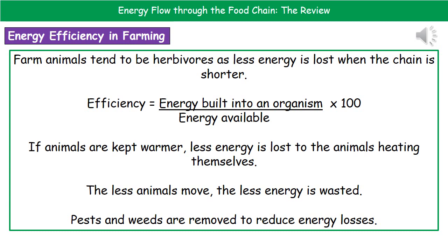Next, if animals don't move as much they will waste less energy. This is where we start to come into the ideas behind intensive farming, where things are kept in cages. It does raise the question of whether it is humane, but it does make farming more energy efficient. Finally, thinking about plants: if we reduce the amount of weeds and pests that come into contact with our crop, we're going to reduce energy losses and therefore provide a larger yield.